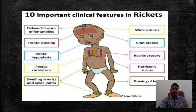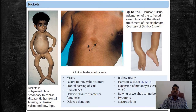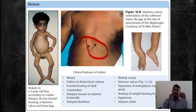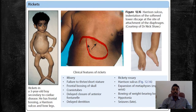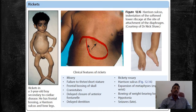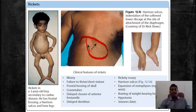In the chest, as you can see in the picture, there is Harrison's sulcus as pointed out by the arrows. There is also rachitic rosary — a bead-like nodular structure along the ribs resembling a chain of beads. Additionally, pectus carinatum and pectus excavatum are two chest changes that can occur in rickets.